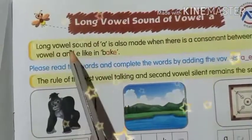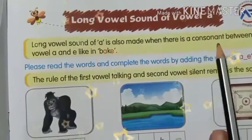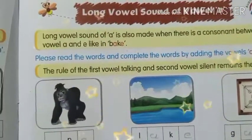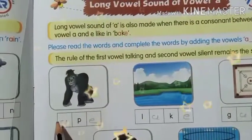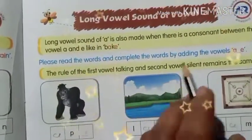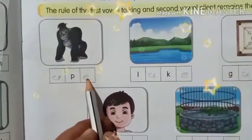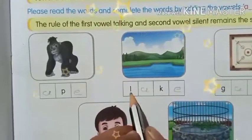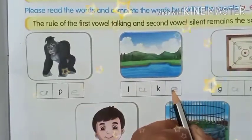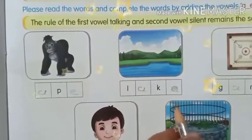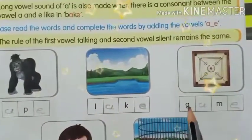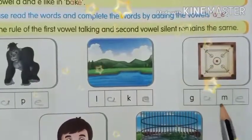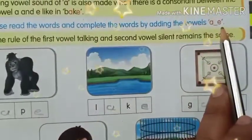The long vowel sound of 'A' is also made when there is a consonant between the vowels A and E. Like a big — please. So here we have to write A and E. Like 'lake' — A-K-E, so I wrote A and E: lake. Then another is 'game' — G-A-M-E: game. I put A and E.